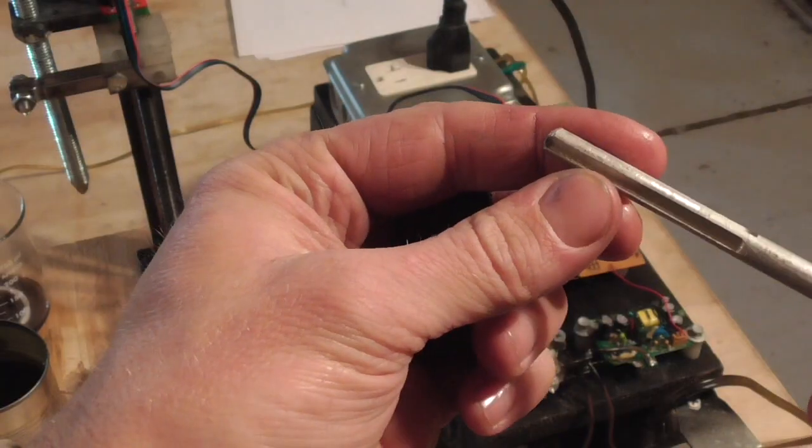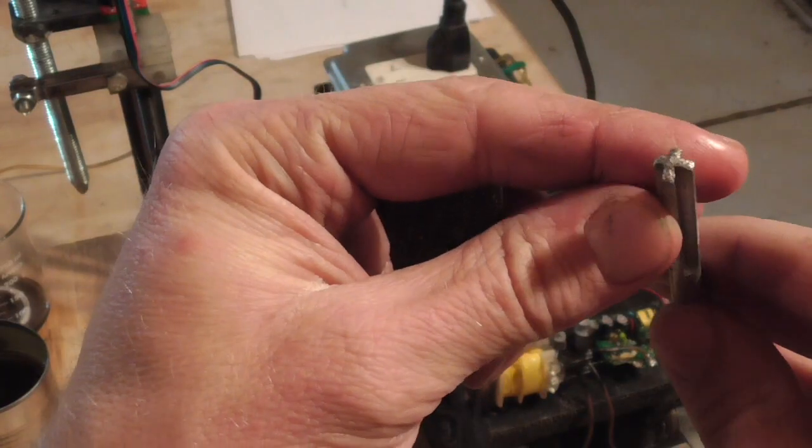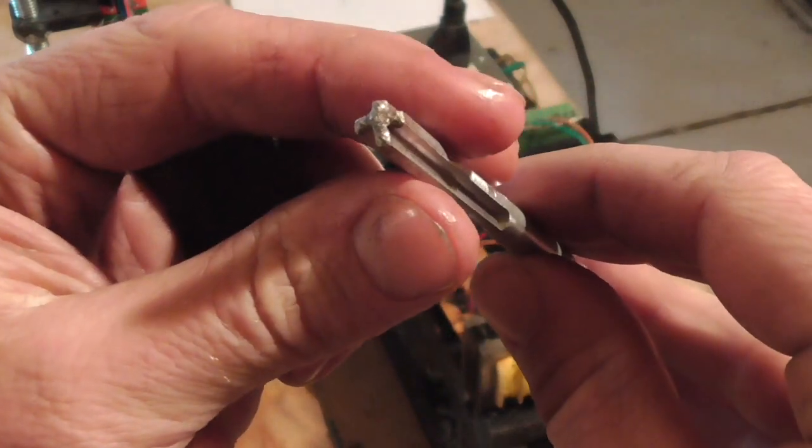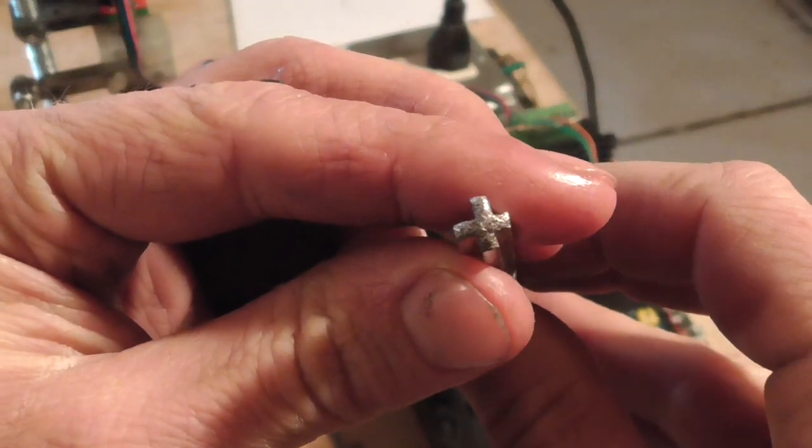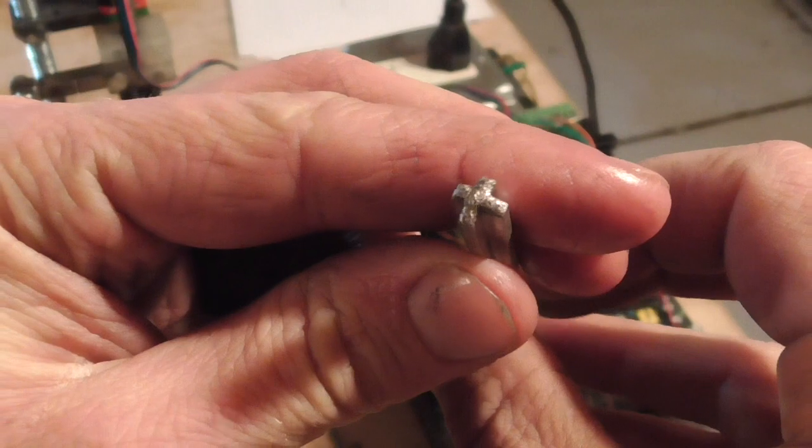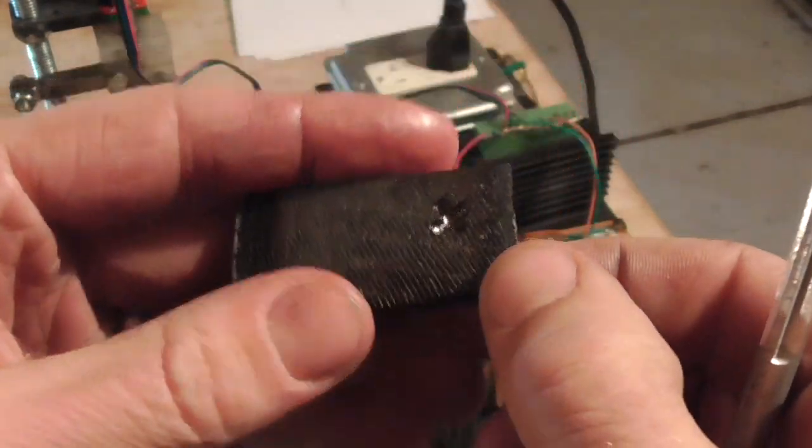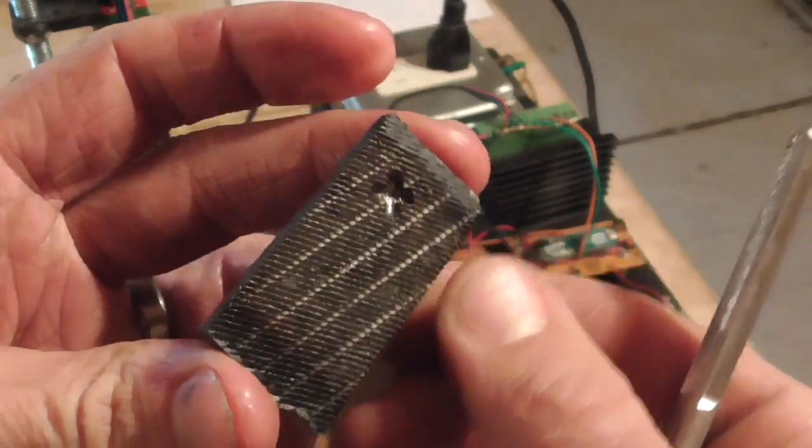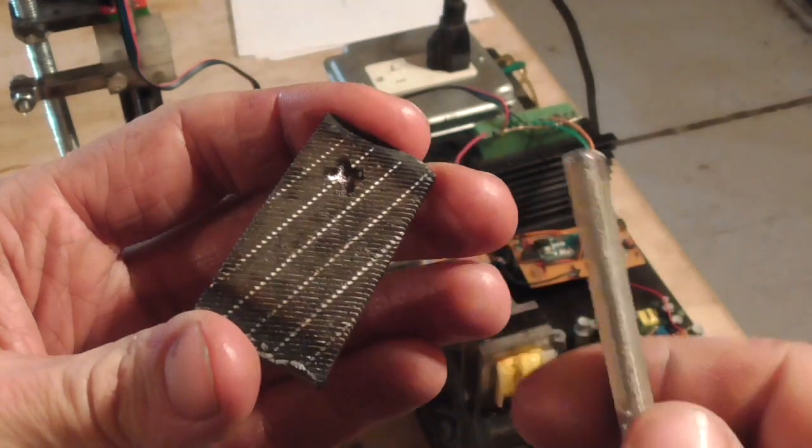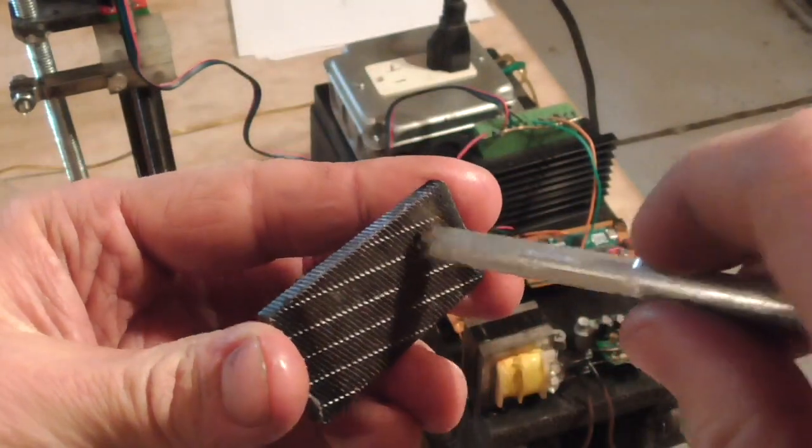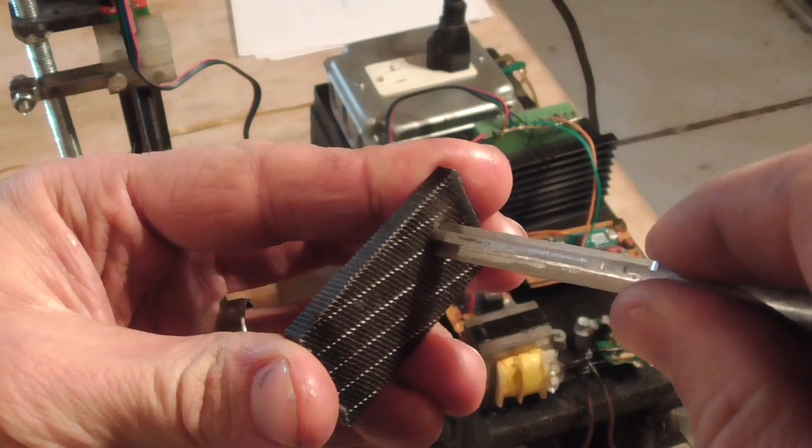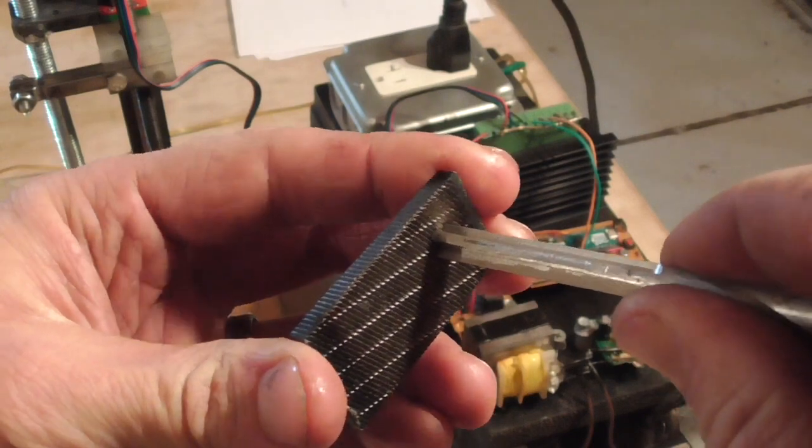So here is the electrode that I was using. As you can see, it has kind of a cross-shaped cross-section, and here is the workpiece. As you can see, that soft aluminum electrode cut right into that hardened steel file.